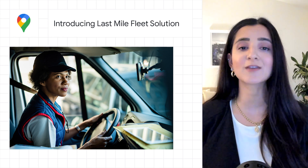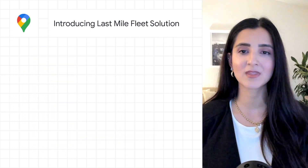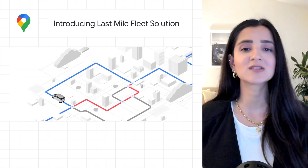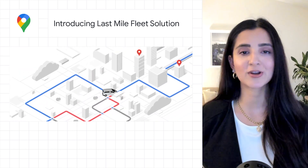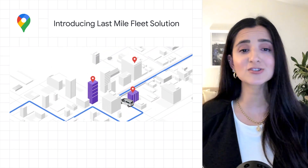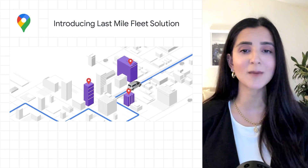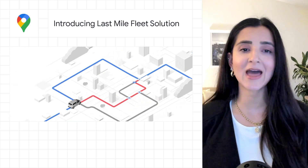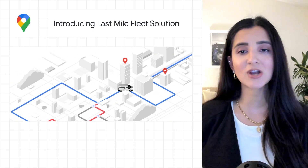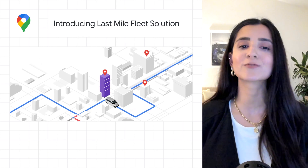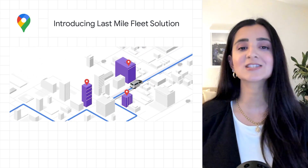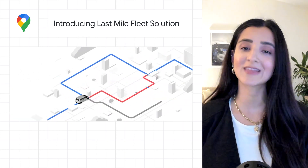It also includes a back-end service to help orchestrate delivery journeys across drivers, consumers, and fleet operation teams. The Last Mile Fleet solution is all about creating exceptional delivery experiences, and the features include route optimization, driver routing and navigation, shipment tracking, and fleet performance. To learn more about the solution, check out the blog linked below.